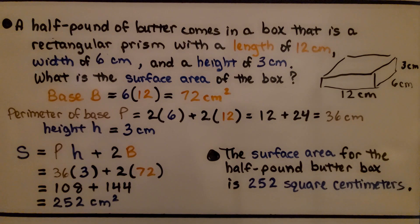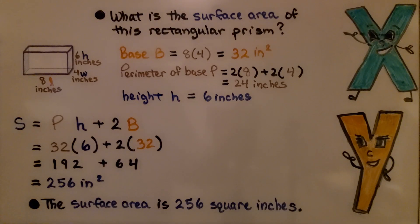The surface area for the half pound butter box is 252 square centimeters. Here we have one last one. What is the surface area of this rectangular prism? We've got a length of 8 inches, a width of 4 inches, and a height of 6 inches. We find the area of the base.